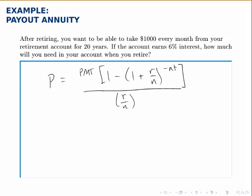In this case we're withdrawing every month for 20 years and the regular amount that we're going to withdraw is $1,000. We're also given an interest rate of 6% and N is 12 because it's monthly, T is 20 because we are doing this process for 20 years.